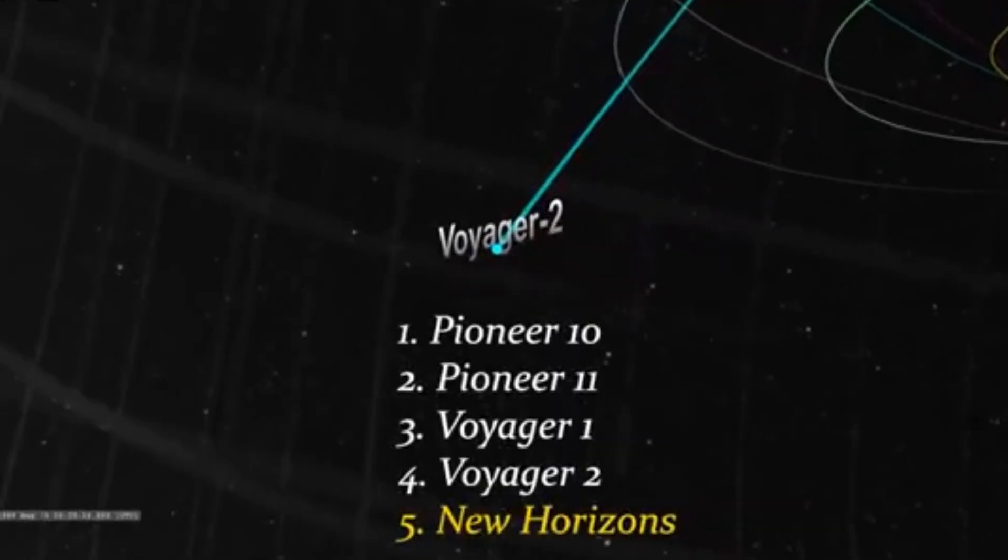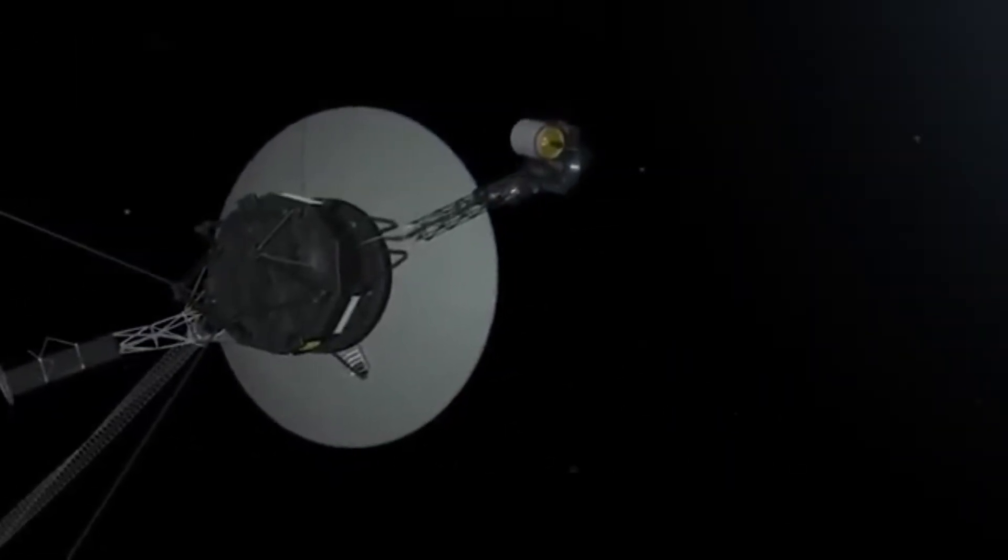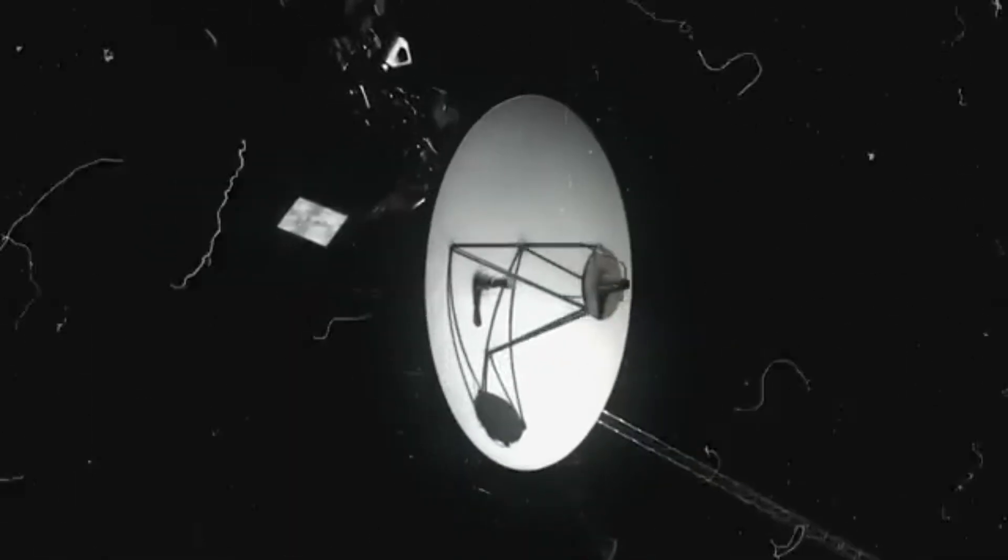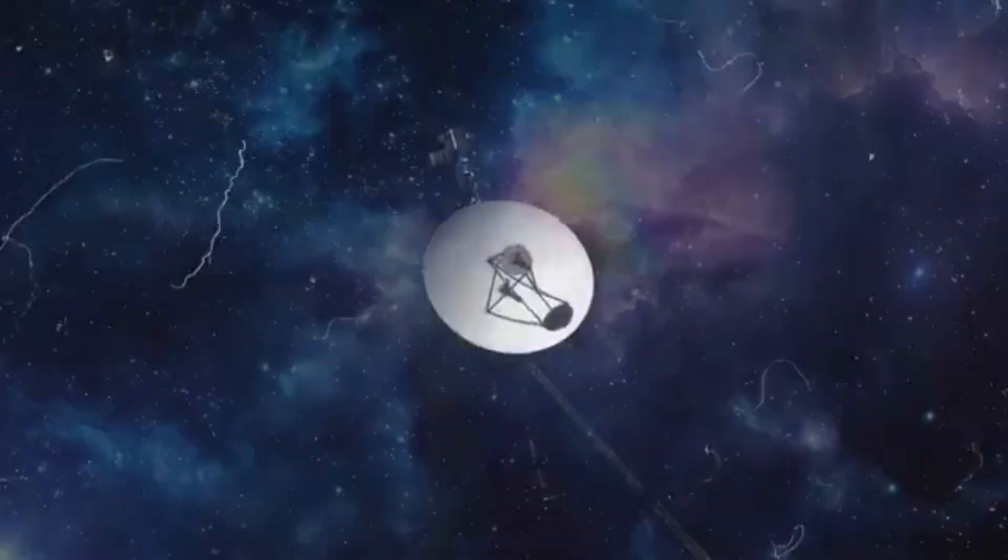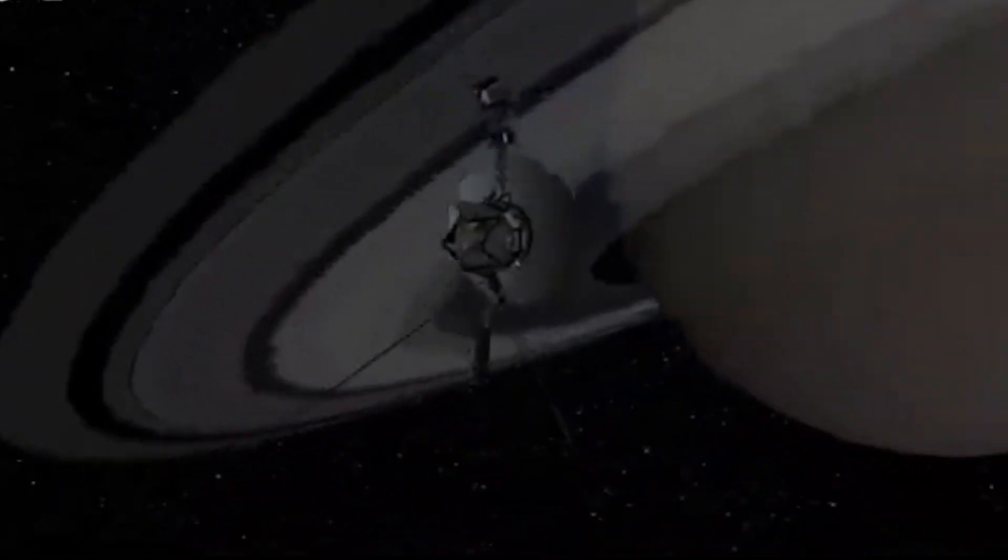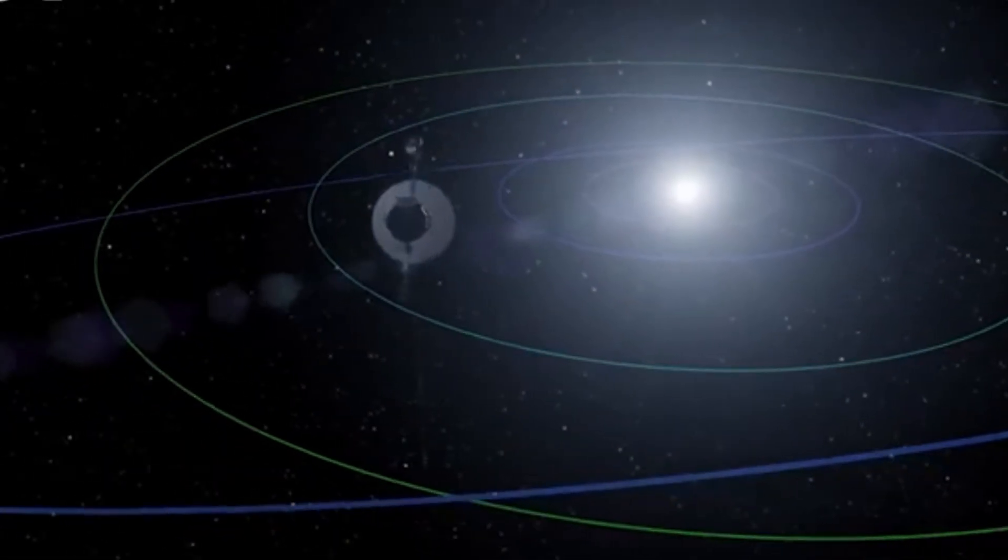This is a theoretical limit assuming the spacecraft continues transmitting and our detection technology remains as it is today. Reaching that distance would take Voyager 1 about 17,000 more years at its current speed of roughly 61,500 kilometers per hour.